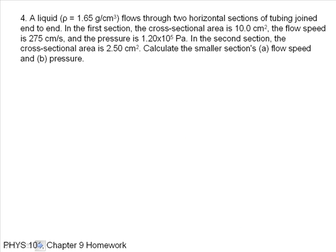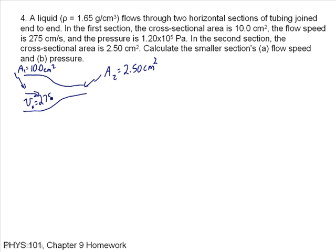A liquid flows through two horizontal sections of tubing joined end to end. The first section, the cross-sectional area, is 10 square centimeters. The flow speed is that, the pressure is that. The second section, the cross-sectional area, is 2.5 square centimeters. So it looks like this. I have a pipe that gets narrower. This cross-sectional area, I'll call A2, is 2.5 square centimeters. And this cross-sectional area, I'll call A1, is equal to 10 square centimeters. The velocity of the fluid here, V1, is equal to 275 centimeters per second.